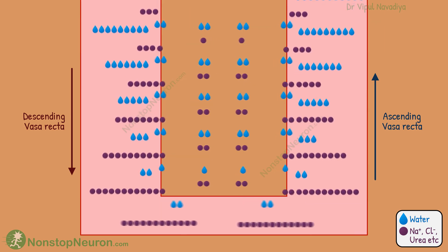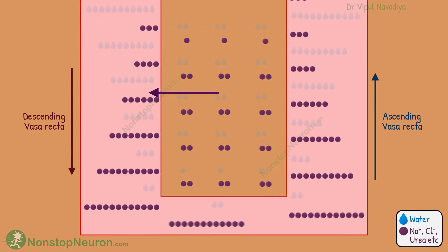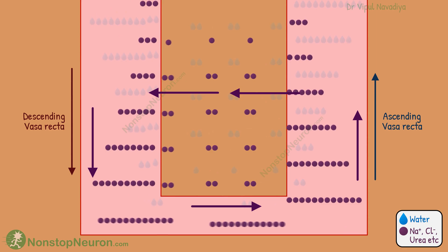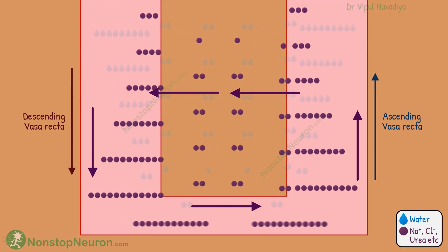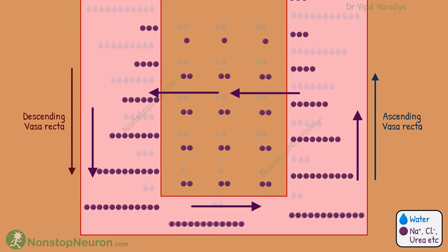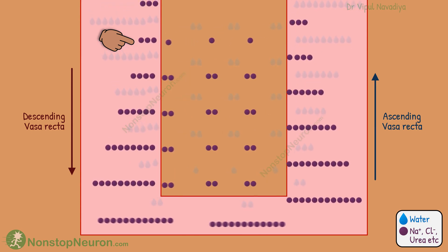Now let's see the collective picture. Observe the movement of solutes: from the interstitium, they enter the descending vasa recta, go to the tip, take a turn, ascend, and come back to the interstitium again. Then they enter the descending vasa recta again. Thus the solutes keep recirculating in this area — in simple words, the solutes are trapped in the deeper part of the medulla. This is also shown by the greater number of solutes at the deeper part compared to their lesser number in the superficial part.